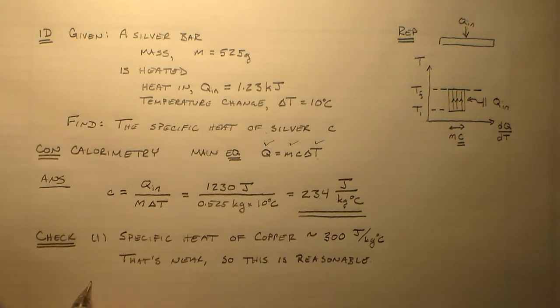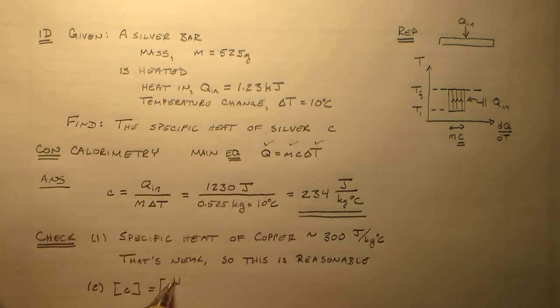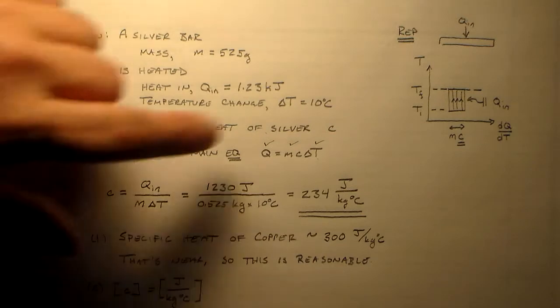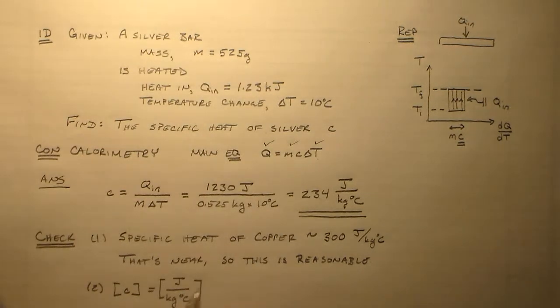Another check might be just the units. So the units for C are joules per kilogram per degree centigrade. This is exactly what we need this to be. That's what it is.